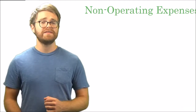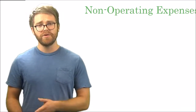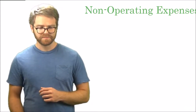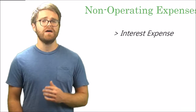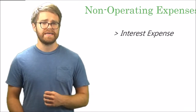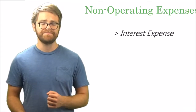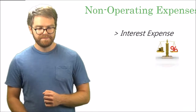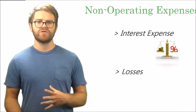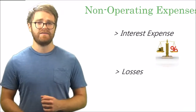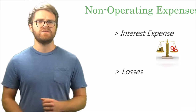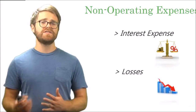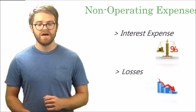Non-operating expenses are the third category. First is interest expense — if you take on debt as a corporation, you have to pay interest on that debt. Interest is the cost of borrowing money, and it's considered non-operating. Then there are losses: when you sell an asset for less than what you originally paid for it, the difference is called a loss. Losses deduct from your income, so they're not favorable.